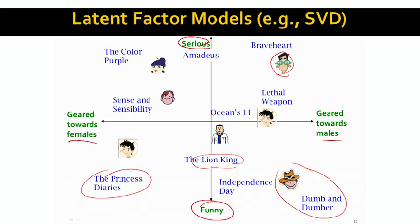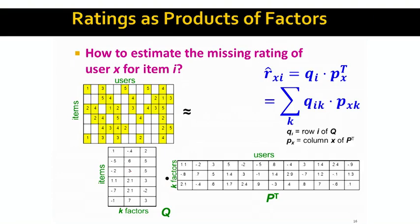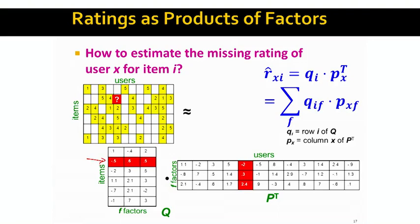Assuming we can represent R as matrices P and Q, how do we estimate a missing rating? That is very easy. If we are making a prediction for user number four and item number two, we take the corresponding row from matrix Q and the corresponding column from matrix P. Then we compute the dot product — the inner product — between these two vectors. If we multiply these two vectors together, the prediction we get is, say, 2.4. So our predicted rating for user four liking movie two would be 2.4.